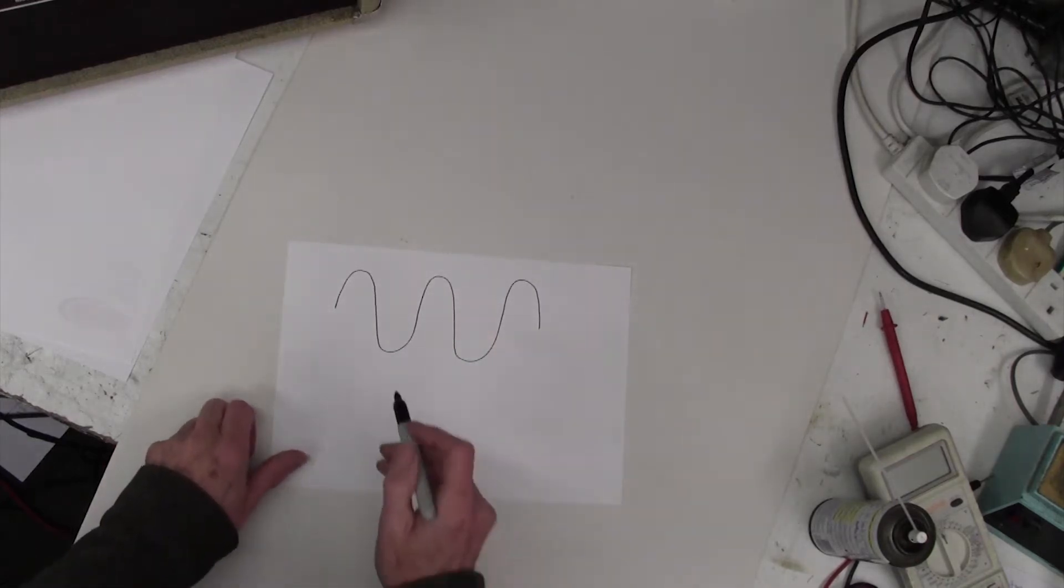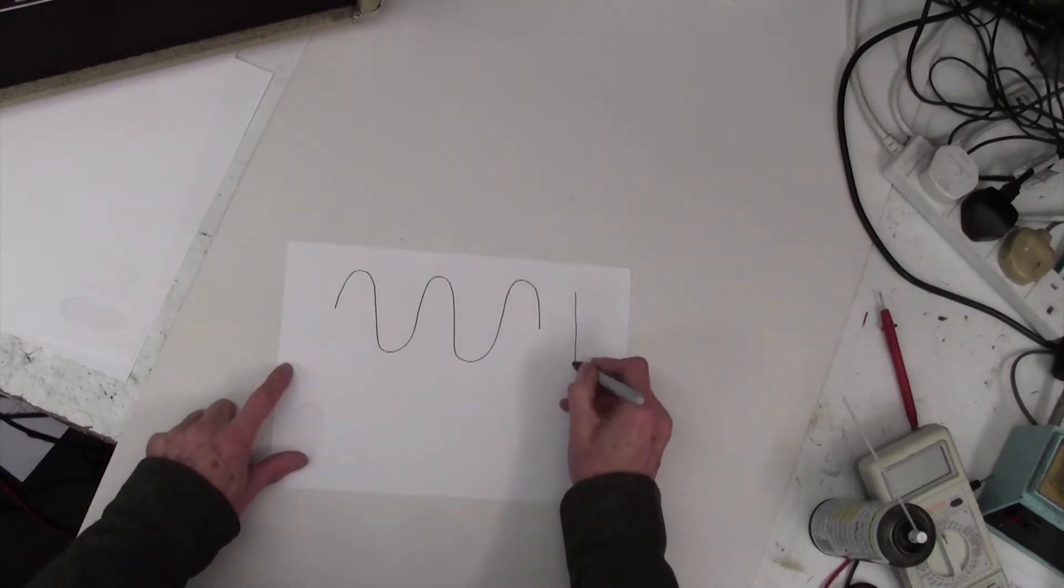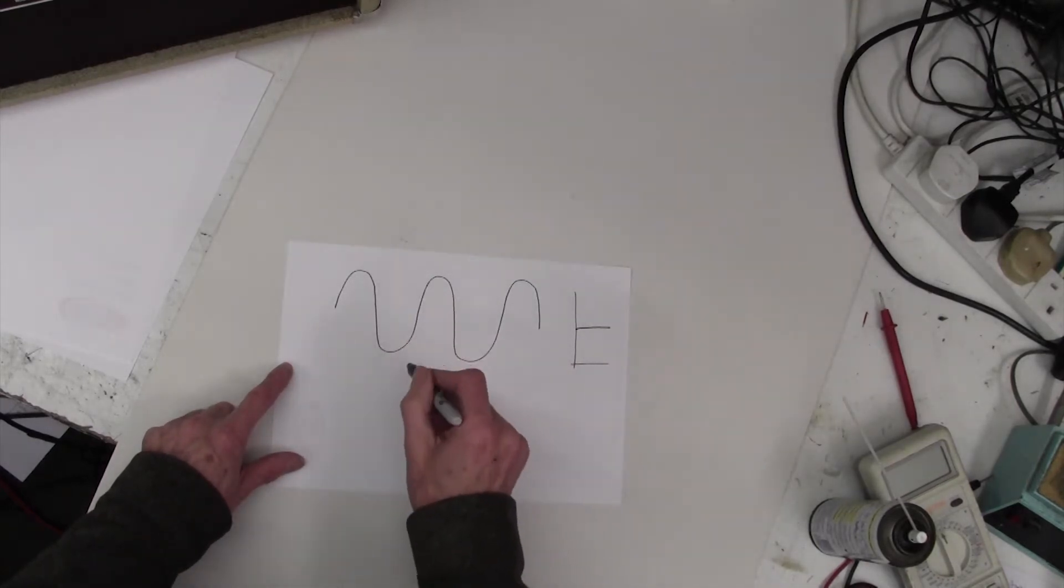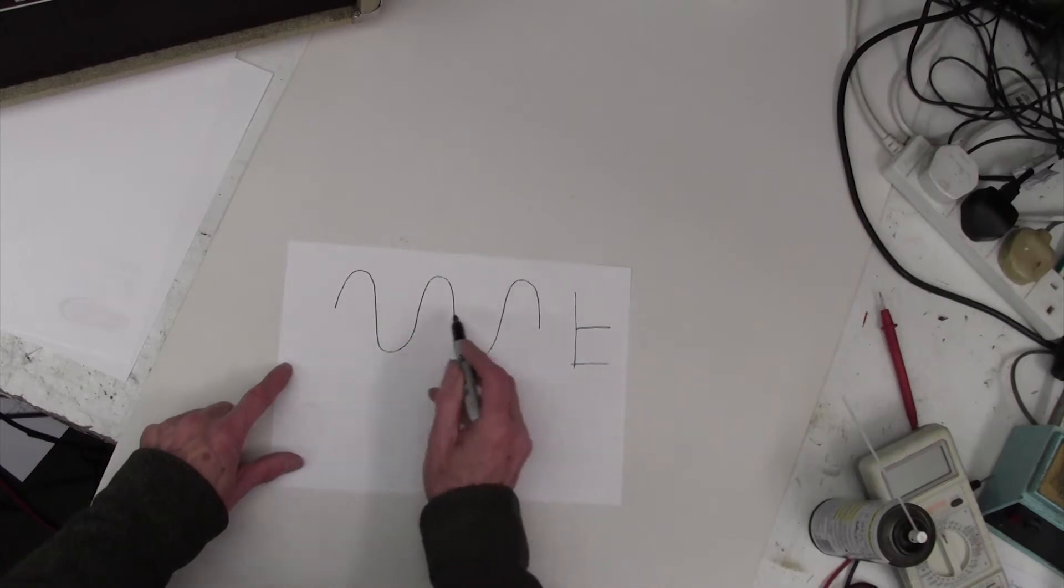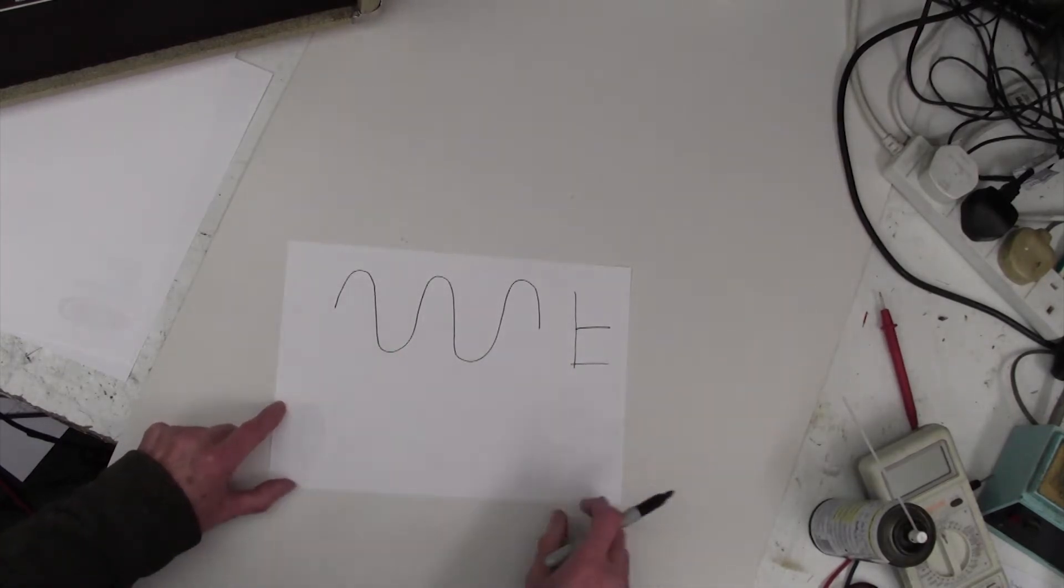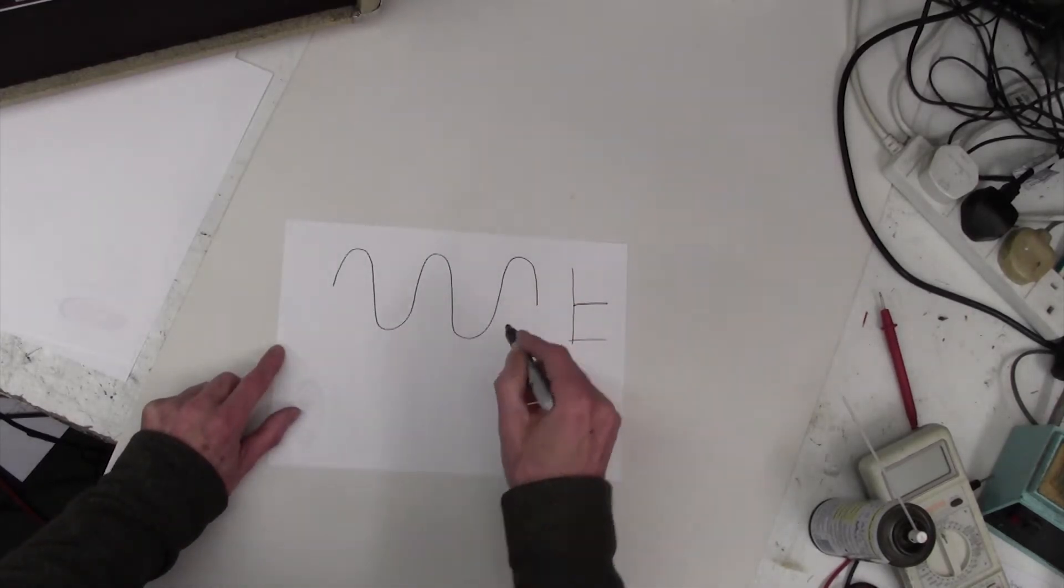So you might intuitively guess that the power of a sine wave is not the same as the power of a DC signal, and that the power would actually lie somewhere between the bottom and the peak. In other words, somewhere in the middle. You might guess it's actually in the middle, but actually it isn't precisely that. So how do we measure the power of a sine wave?